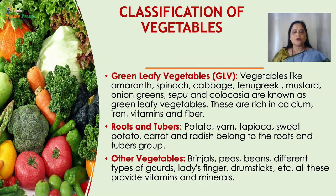Roots and Tubers: Potato, yam, tapioca, sweet potato, carrot, radish etc. belong to the roots and tubers group. Tubers like potato and sweet potato can replace a part of cereals in our diet as they are equally rich in carbohydrates.